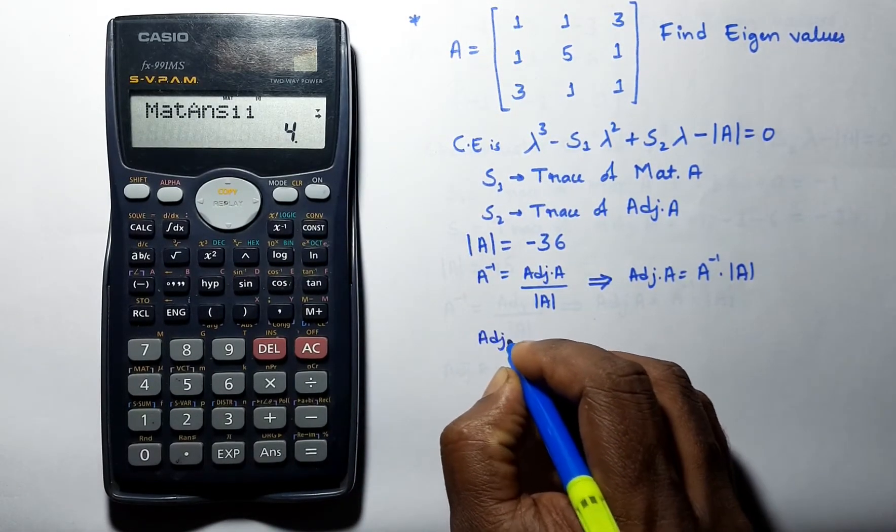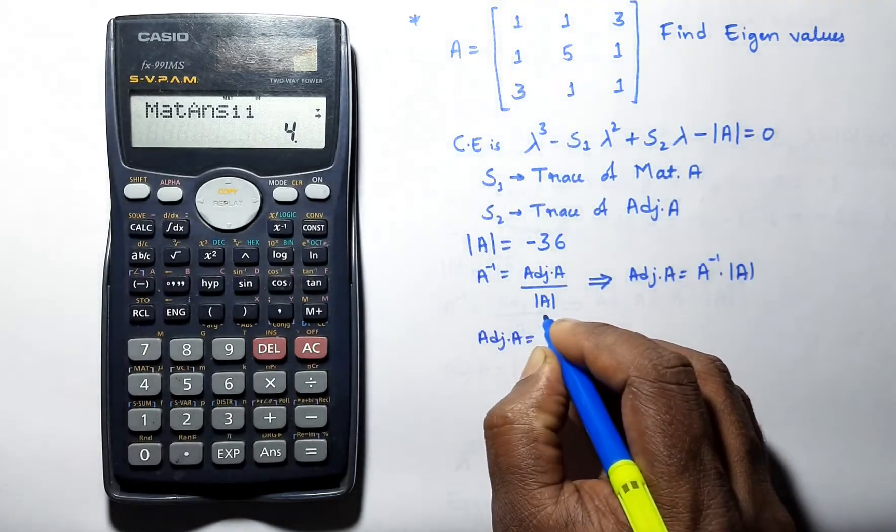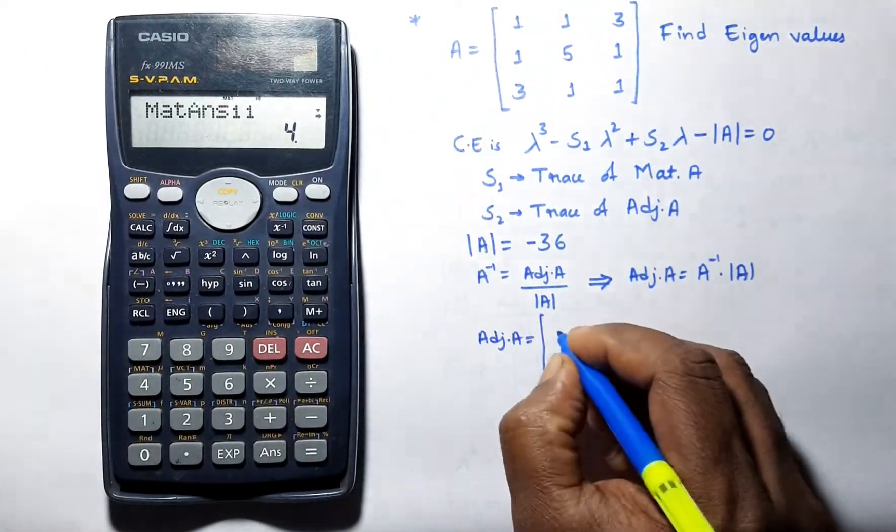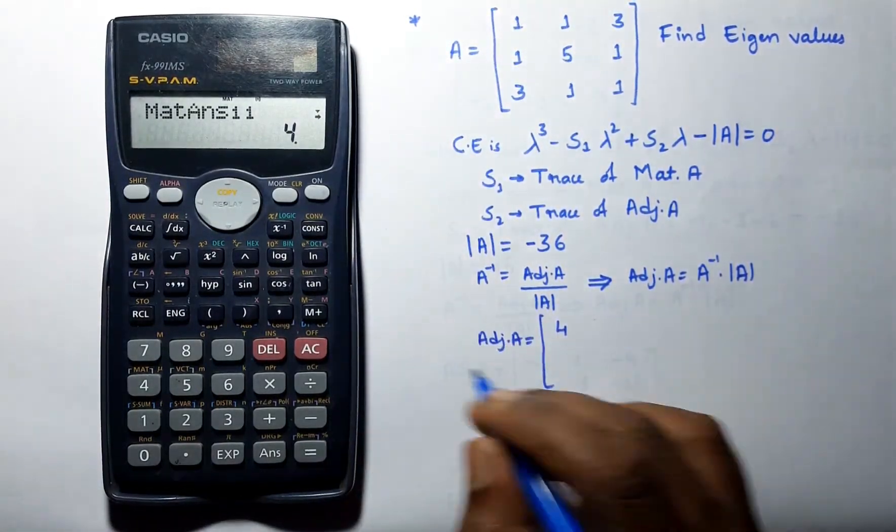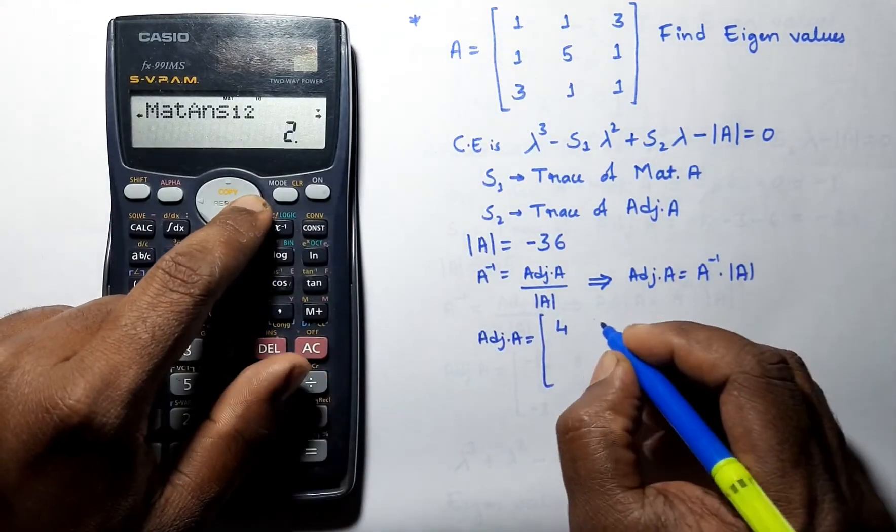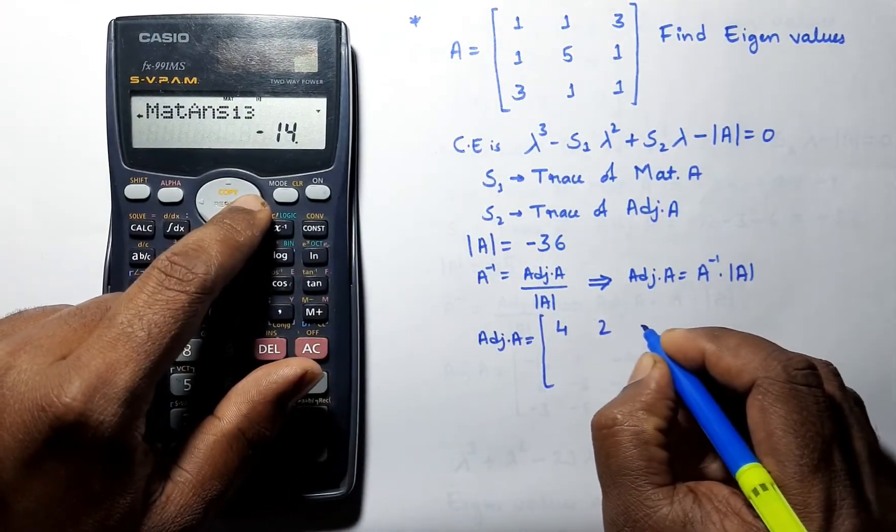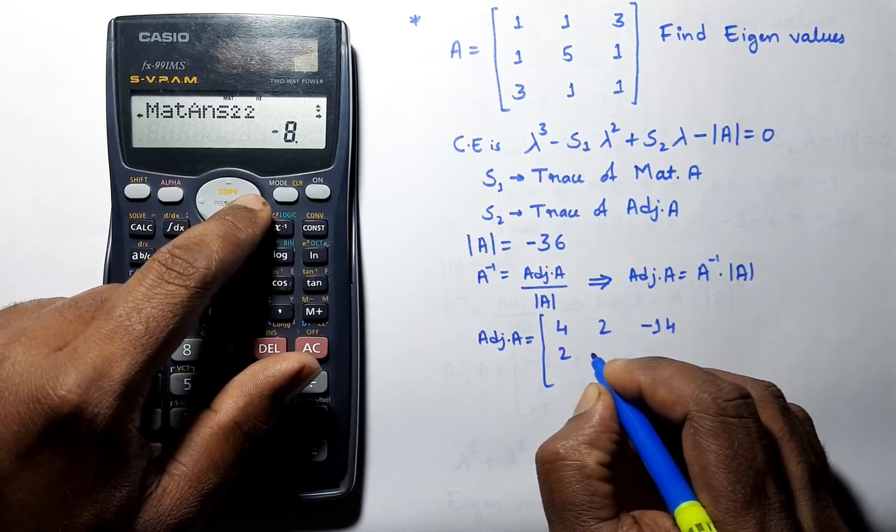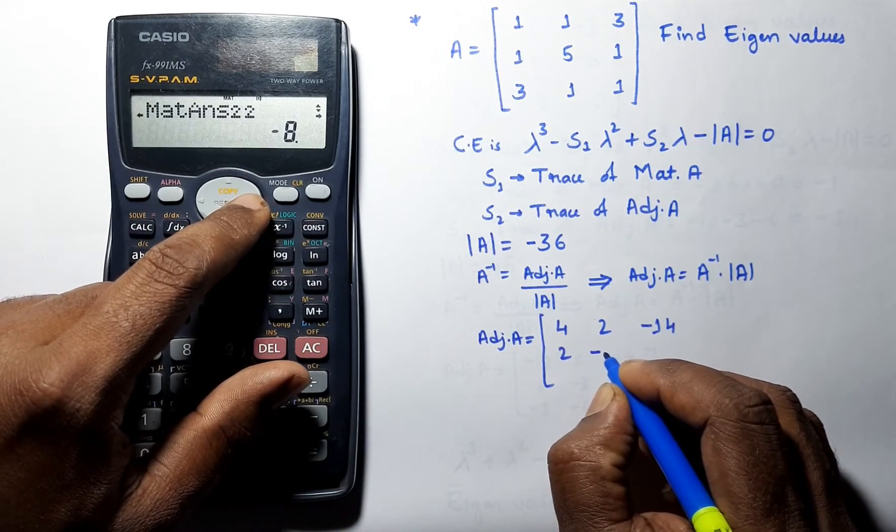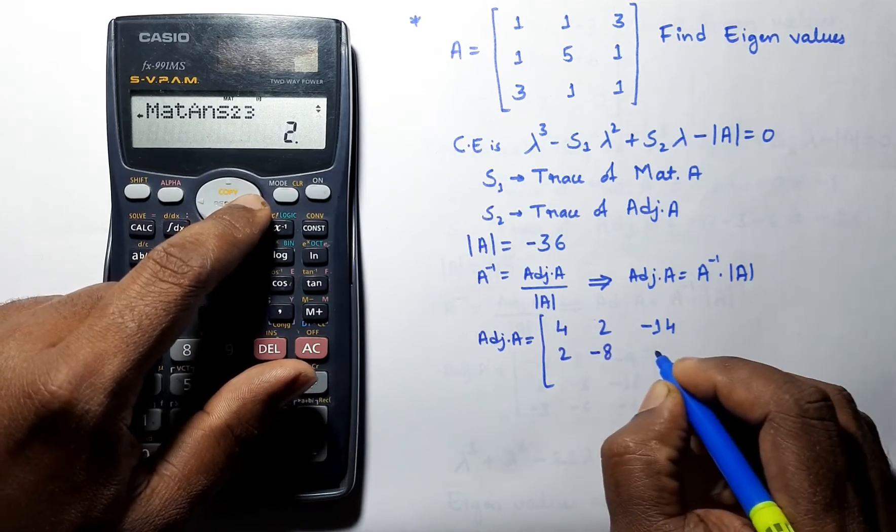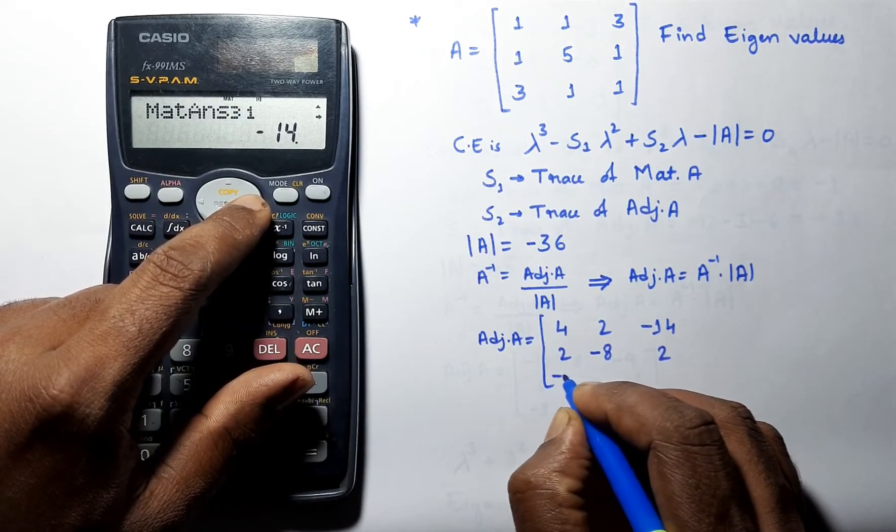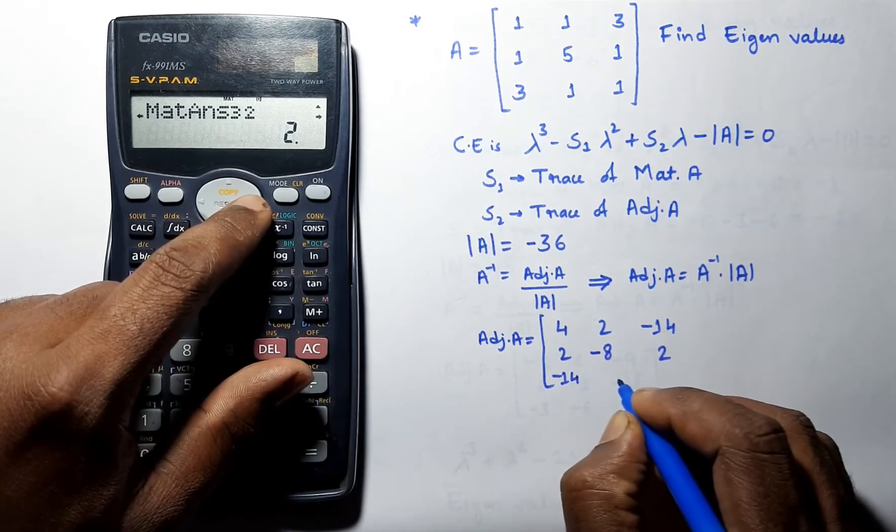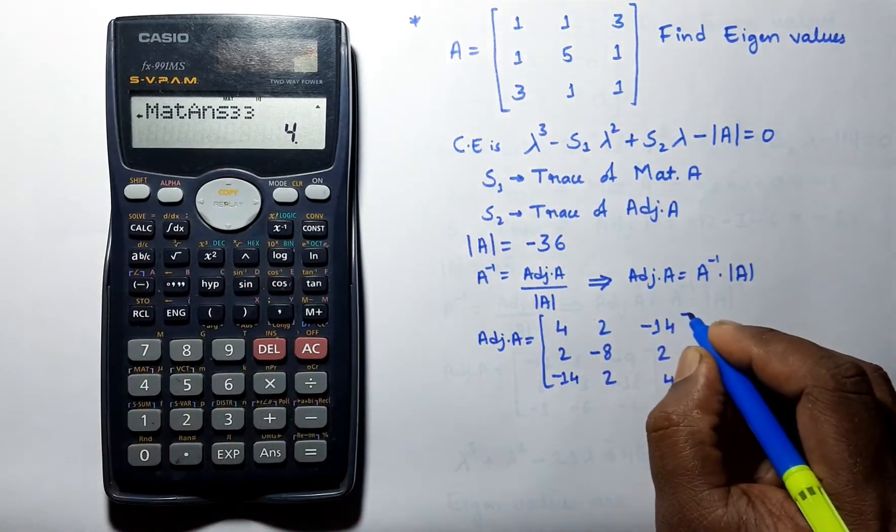We can note the adjoint A is equal to: 4, 2, minus 14; 2, minus 8, 2; minus 14, 2, and 4.